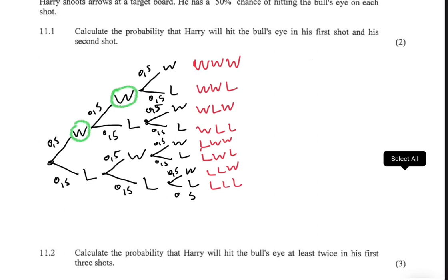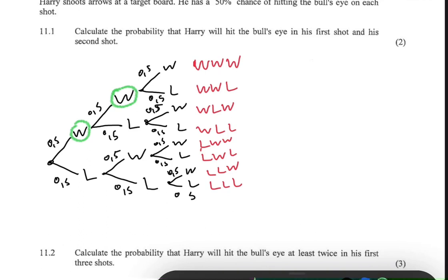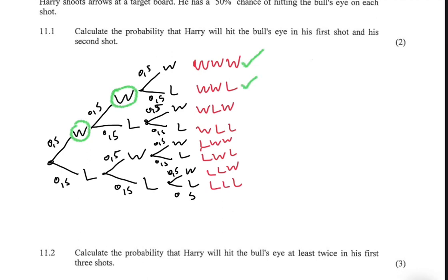We need at least two wins, because Harry Maguire has to hit the bull's eye in at least two of the three shots. Clearly, win-win-win gives three wins. Win-win-loss and win-loss-win each give two wins, which is what we want. Loss-win-win also gives two wins. The remaining outcomes have two or three losses and don't satisfy our requirement. So there are four possible ways Harry Maguire can hit at least two of three shots.